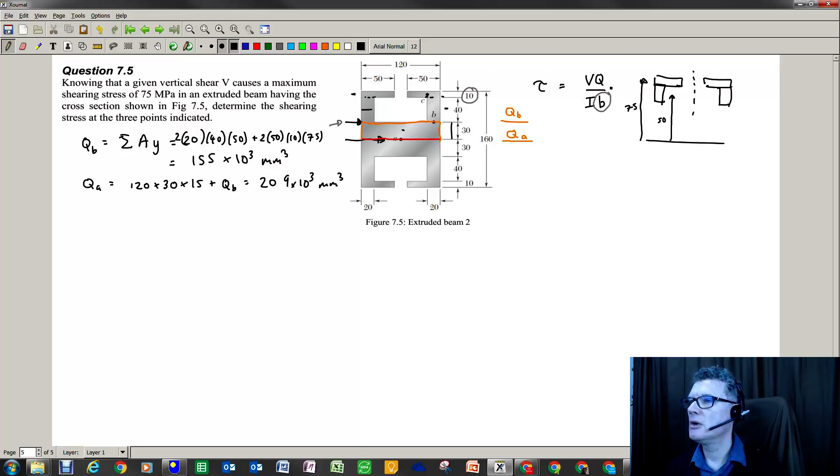And what I'm interested in is what's Q divided by b for these two particular sections? So Qb divided by b. We need to measure this bit and this bit. So that's if we're trying to pull away the top Qb section. And that gives me 20 plus 20. So we are going to have 155 times 10 to the 3 divided by 40. Gives you 3875 millimeters squared.